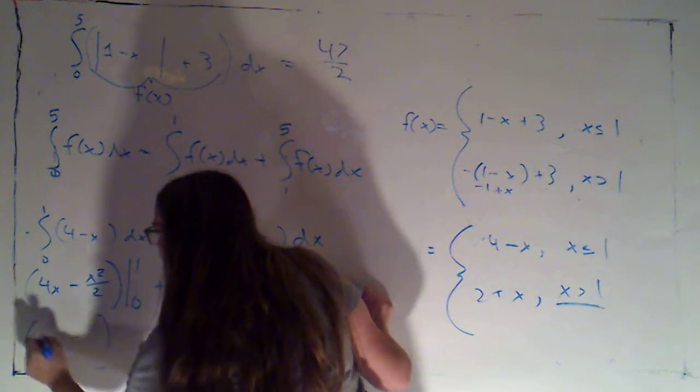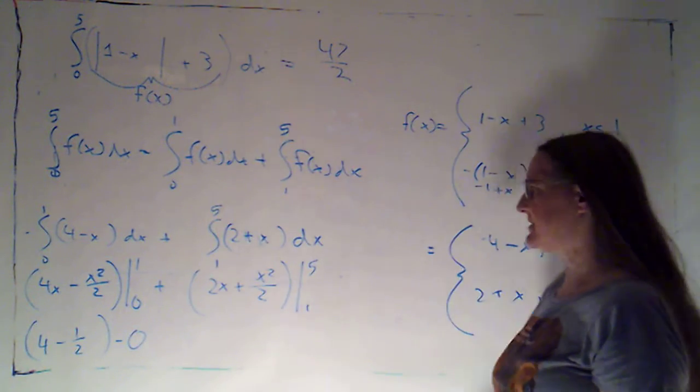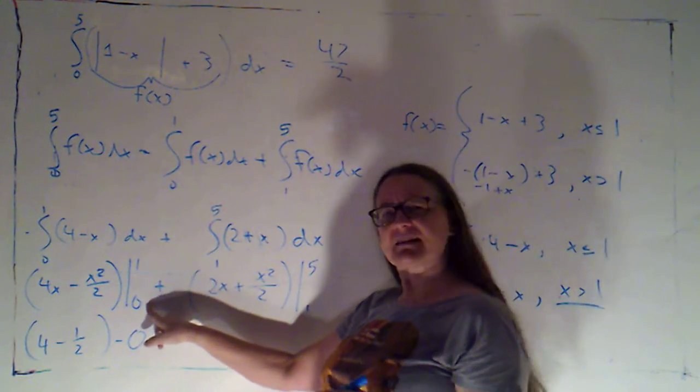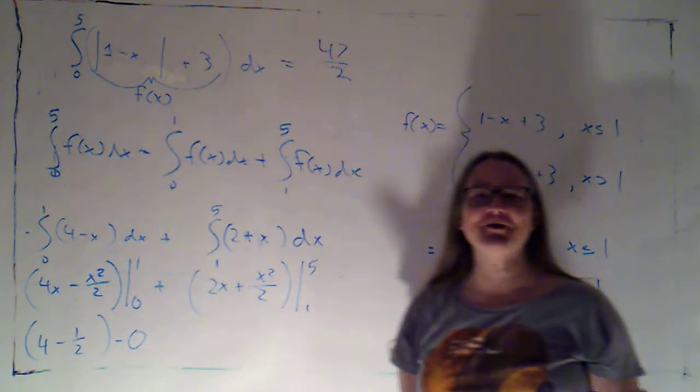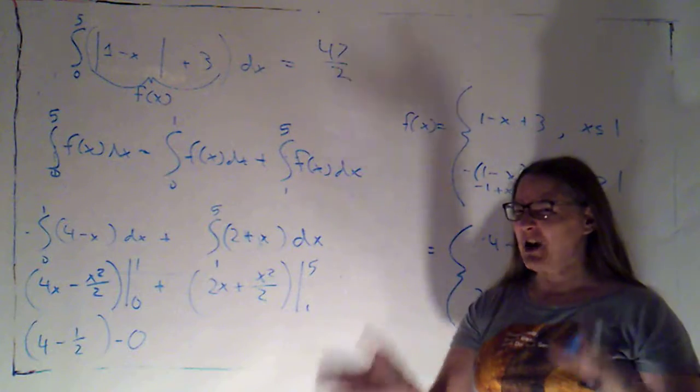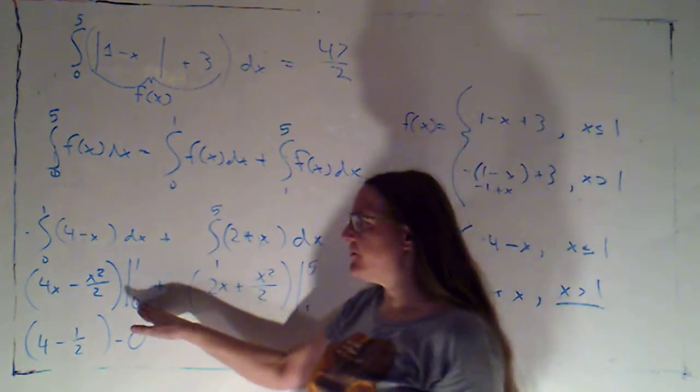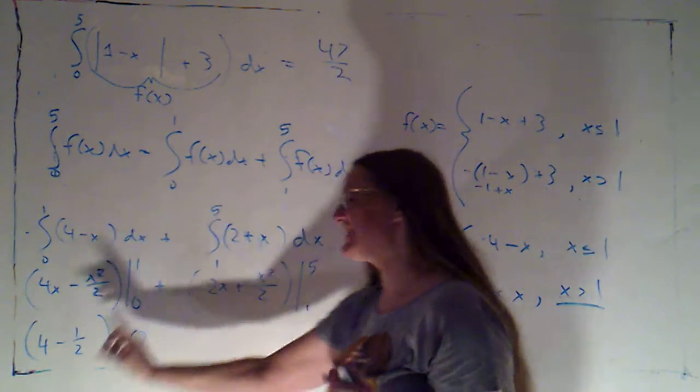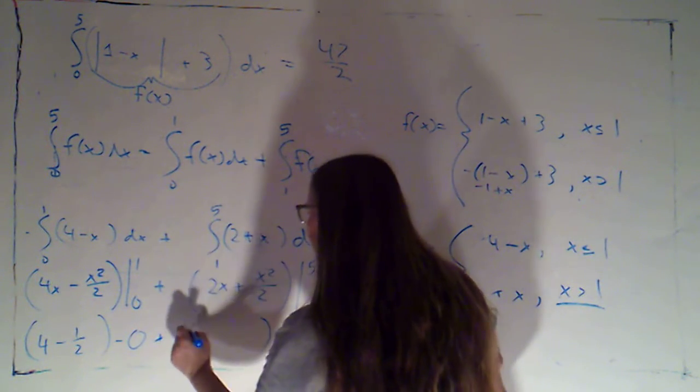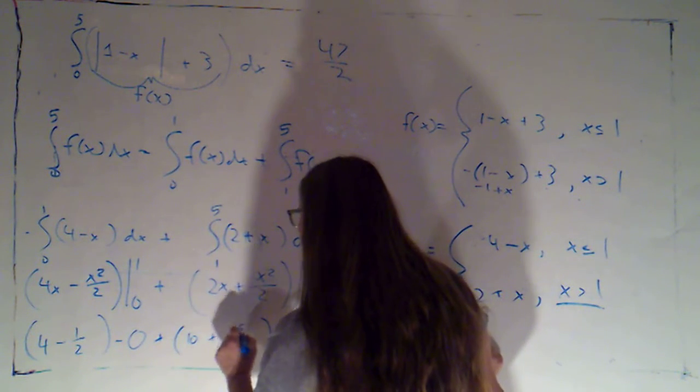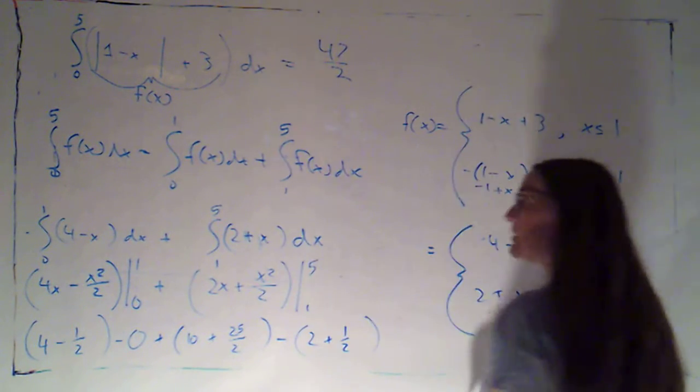When I plug in 1 I'm going to get 4 minus 1 half, minus when I plug in 0 I do just get 0. Very often that's the case. I usually write the minus 0 just because every once in a while I'm plugging into a function that 0 doesn't make it go away, like cosine of 0 is 1, e to the 0 is 1. So it's not always true if I plug in 0 then I'm going to get nothing, so I like to write it just to confirm that I double check. Okay, when I plug in 5 I'm going to get 10 plus 25 halves, minus when I plug in 1 I'm going to get 2 plus 1 half.